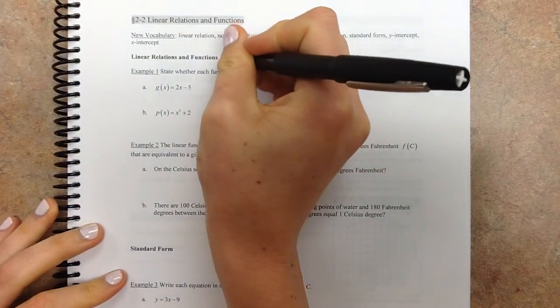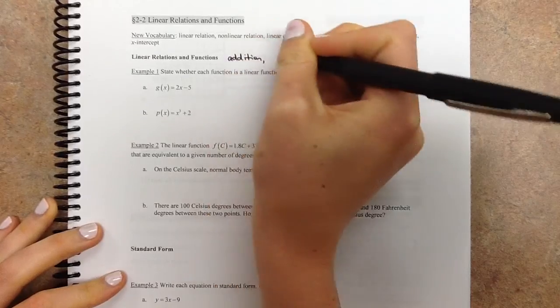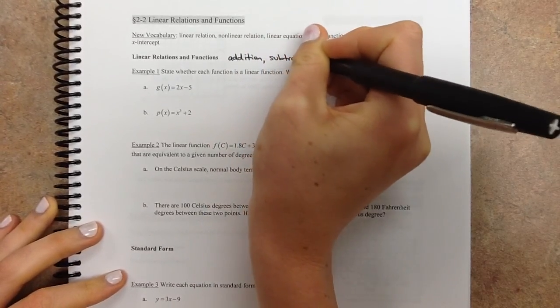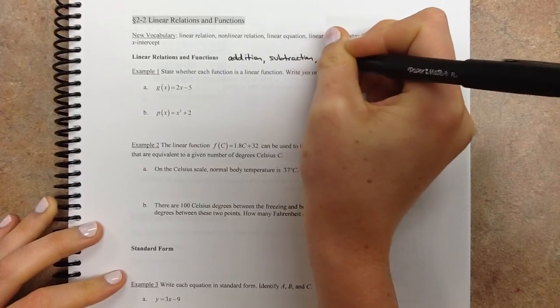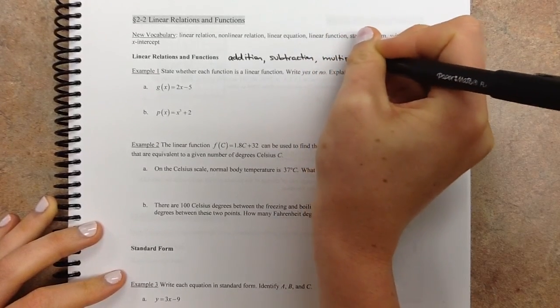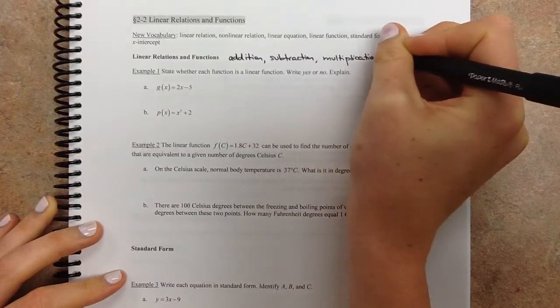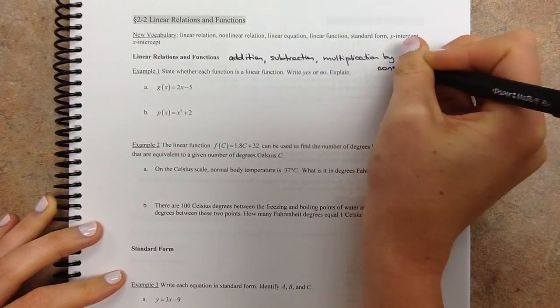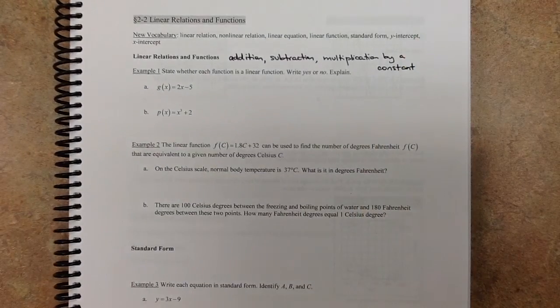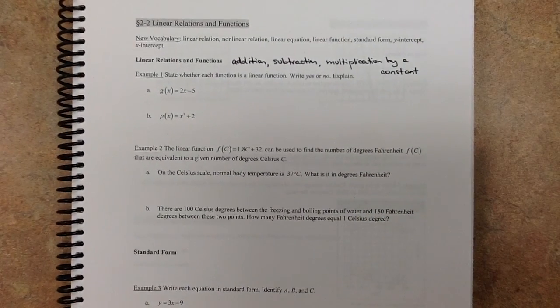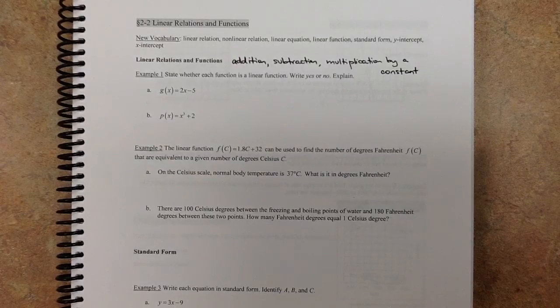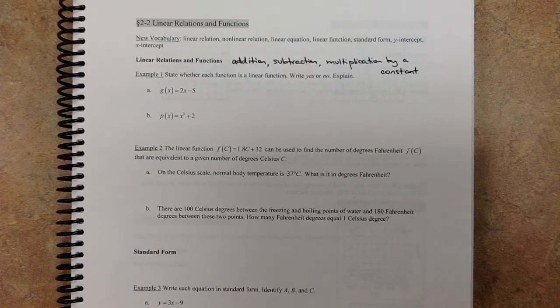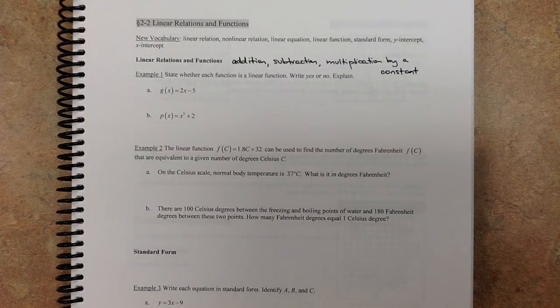You can have addition, you can have subtraction, and you can have multiplication by a constant. A constant meaning a number, like 3 or something like that. So those three things are allowed. You can add terms together, you can subtract terms from each other, you can multiply a variable by a constant, but there are many things that are not allowed.